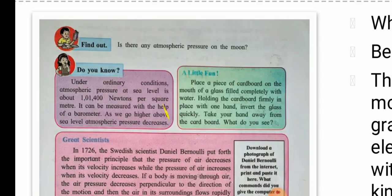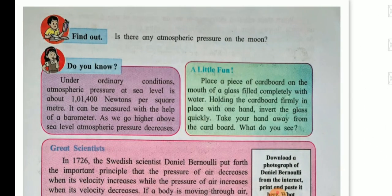Find out, is there any atmospheric pressure on the moon? No, there is no atmospheric pressure on the moon. Do you know? Under ordinary conditions, atmospheric pressure at sea level is about 1,1400 N per square meter. It can be measured with the help of a barometer, an instrument. As we go higher above the sea level, atmospheric pressure decreases.